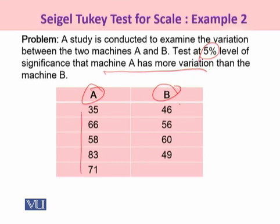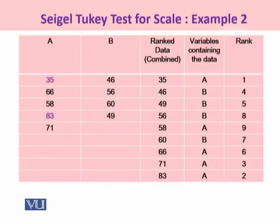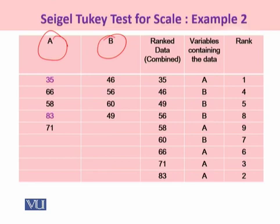This is a small sample dataset where the number of observations under A are more than that of B. The first step in the calculation is to combine the two samples A and B such that the smallest observation appears first and the largest observation appears last — this forms a combined ordered array of group A and B observations.